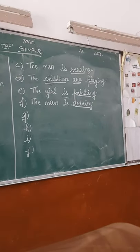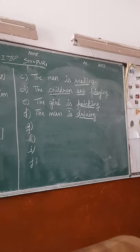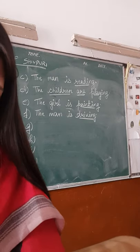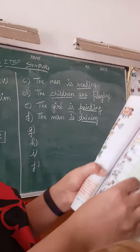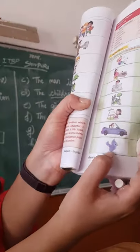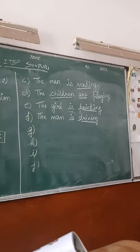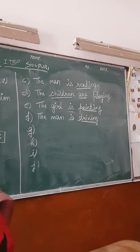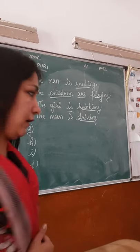Okay children, we are back again. Now I will show you again a picture, and you have to tell what is going on in this picture. Children, you can see again a picture. This is a flying bird. You can see a bird is flying. In this picture, a bird is flying.